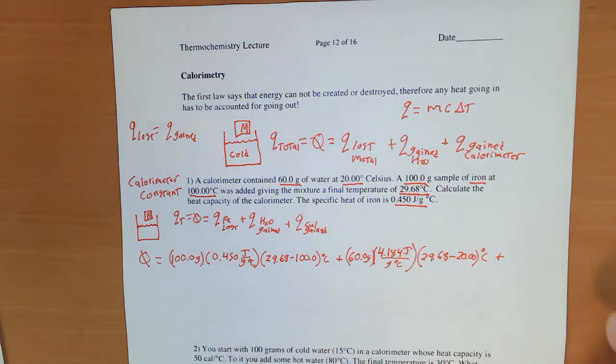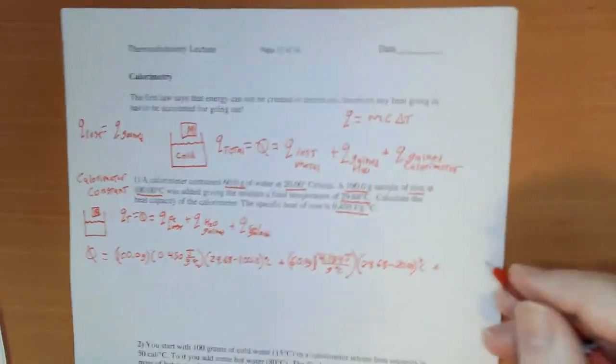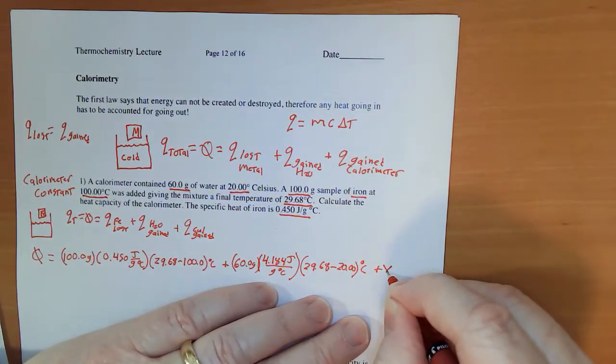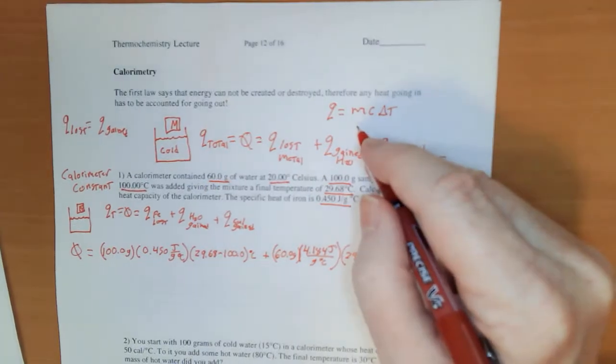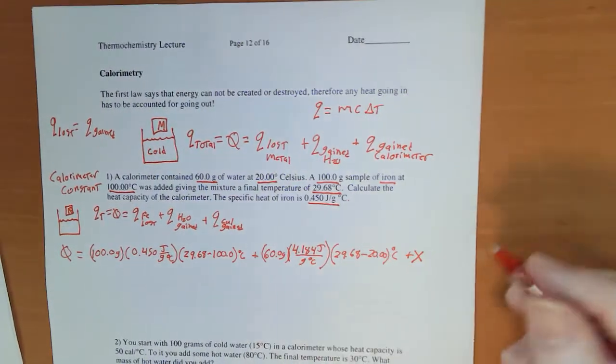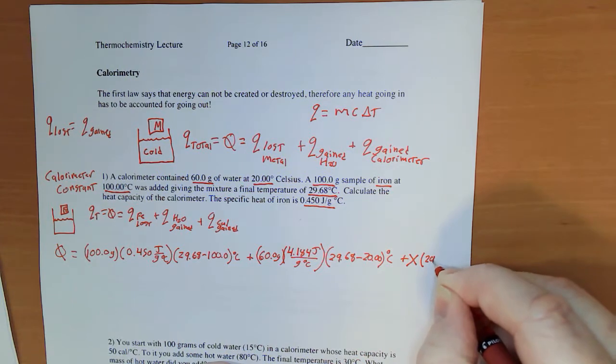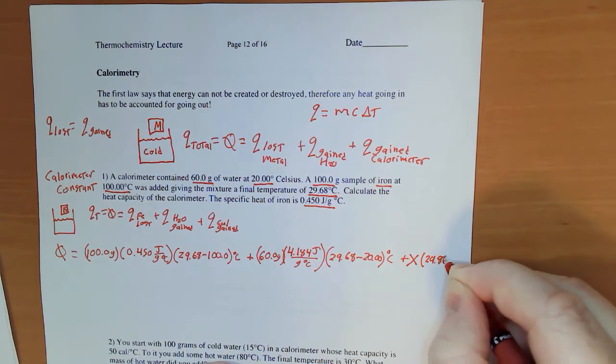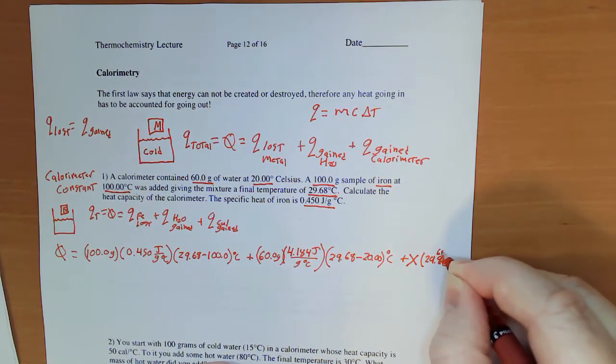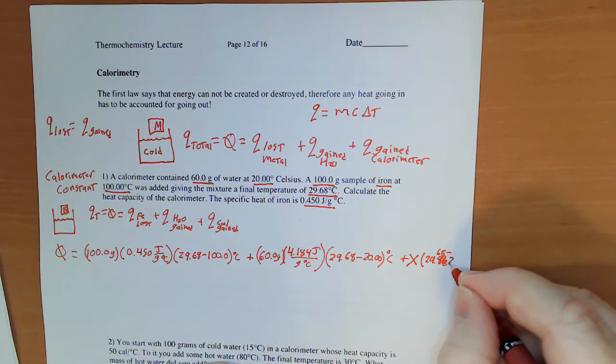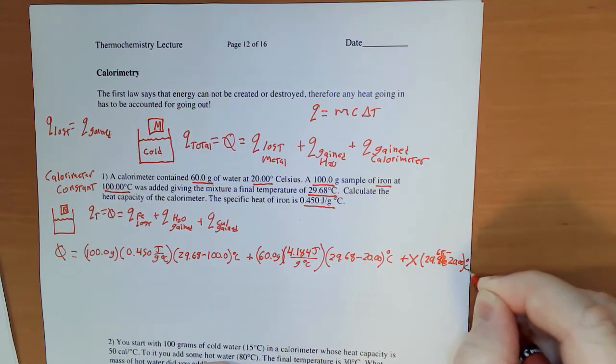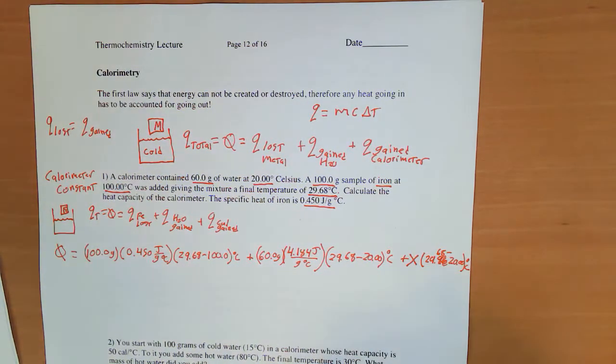Plus, the calorimeter constant we'll call x. We don't need a mass because calorimeter mass isn't ever going to change, times the temperature change which is 29.68 minus 20.00 degrees Celsius. Since the calorimeter contained the water, the calorimeter and the water should be at thermal equilibrium.